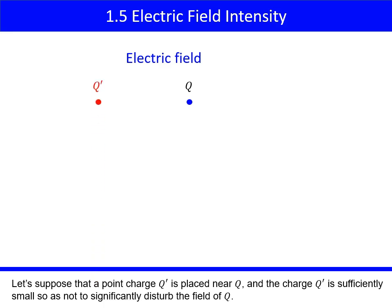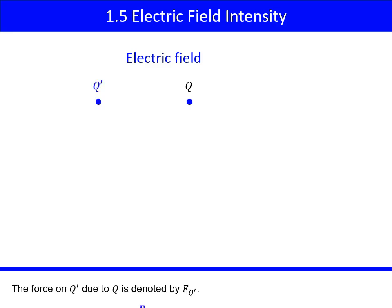Let's suppose that a point charge Q' is placed near Q, and the charge Q' is sufficiently small so as not to significantly disturb the field of Q. The force on Q' due to Q is denoted by FQ'.